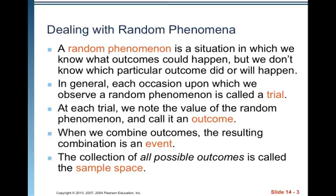A random phenomenon is a situation in which we know what outcomes could happen but we don't know which particular outcome did or will happen. Each occasion upon which we observe a random phenomenon is called a trial. At each trial we note the value of the random phenomenon and call it an outcome. When we combine outcomes, the resulting combination is an event. The collection of all possible outcomes is called the sample space.